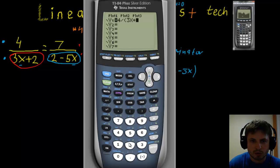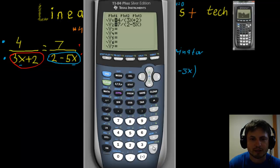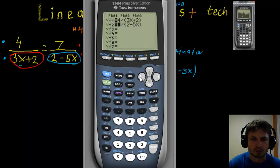Brackets are super important here. Enter the left side as Y1: 4 divided by bracket (3x + 2). The right side as Y2: 7 divided by bracket (2 minus 5x). Be very careful with brackets — without them the calculator will apply order of operations left to right and divide 7 by 2 first, then subtract 5x, giving the wrong result.